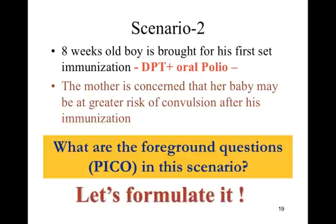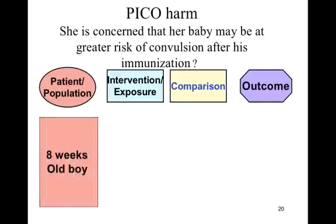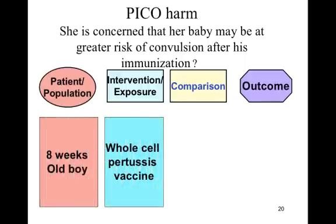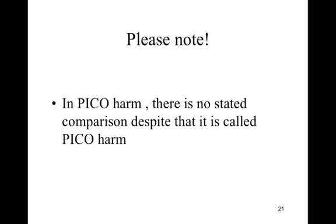Let us formulate PICO harm. To formulate PICO harm in this scenario, we should identify the population — eight-week-old boy — and the intervention, which is the whole cell pertussis vaccine. There is no comparison, but the outcome needed by the mother is to avoid the risk of convulsion. The harm we want to avoid is the risk of convulsion. So PICO harm is formulated as: in an eight-week-old boy, what is the risk of convulsion after the whole cell pertussis vaccine? Please note, in PICO harm there is no stated comparison, and despite that, it is still called PICO.